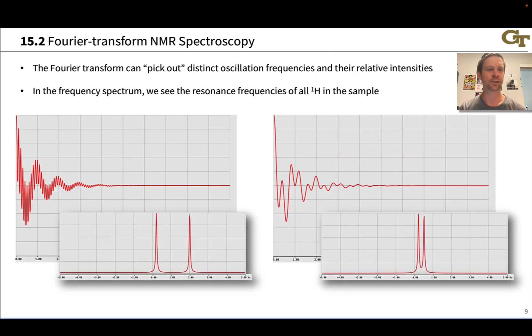This slide just shows you the idea in graphical form. So here's a hypothetical FID for a compound containing two different types of hydrogens. We can notice two different types of oscillations here: a low frequency oscillation that looks like this, and a high frequency oscillation that's kind of the sharp ups and downs within that low frequency oscillation.